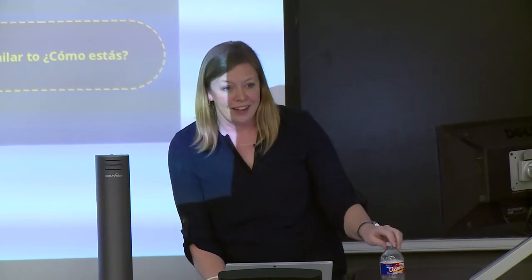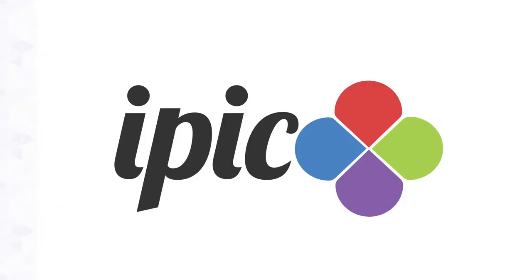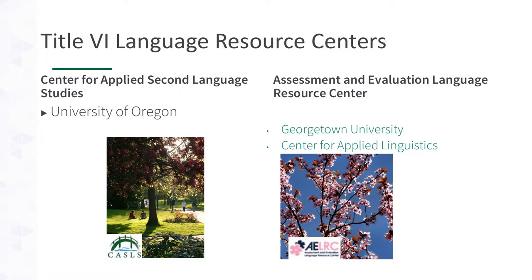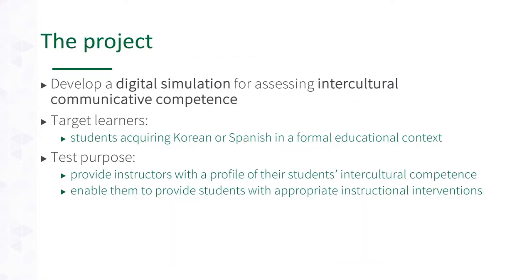The last piece is IPIC. This is one of the projects we're most excited about and most challenged by. IPIC is a partnership with AELRC out of Georgetown University and the Center for Applied Linguistics. The goal is to develop a digital simulation for assessing this framework — can we put an IPIC score next to an OPI score and give a more accurate picture of how well a learner will do? You might only be advanced mid proficiency level, but you might have a really high IPIC score.